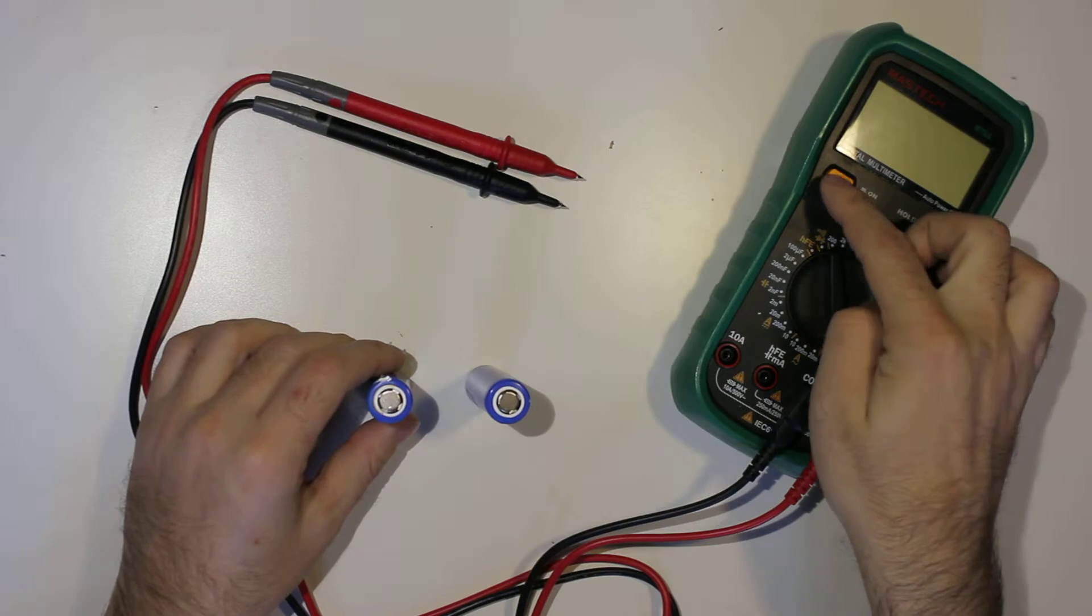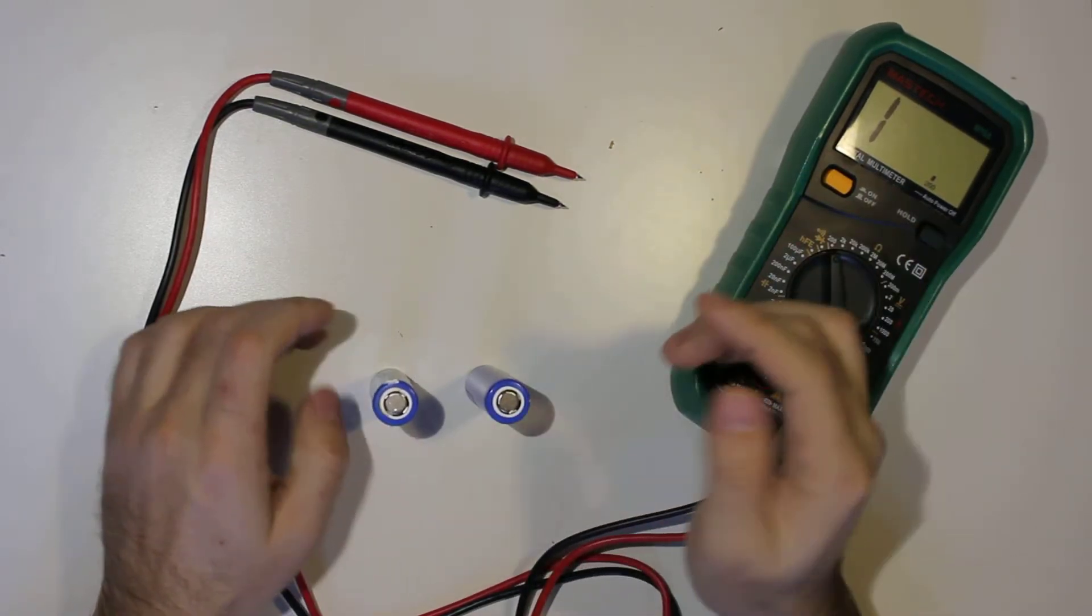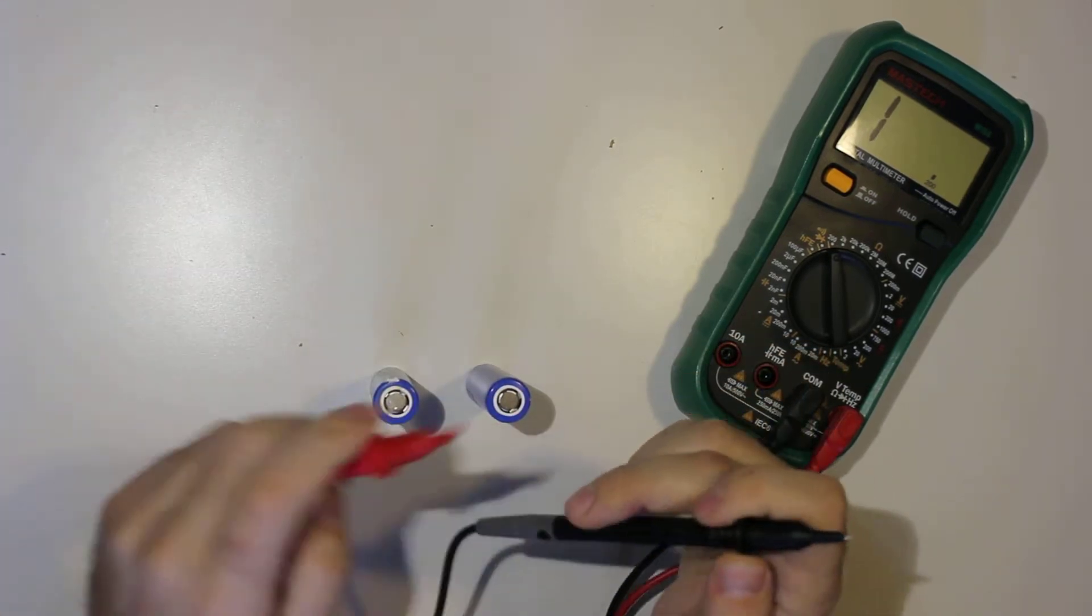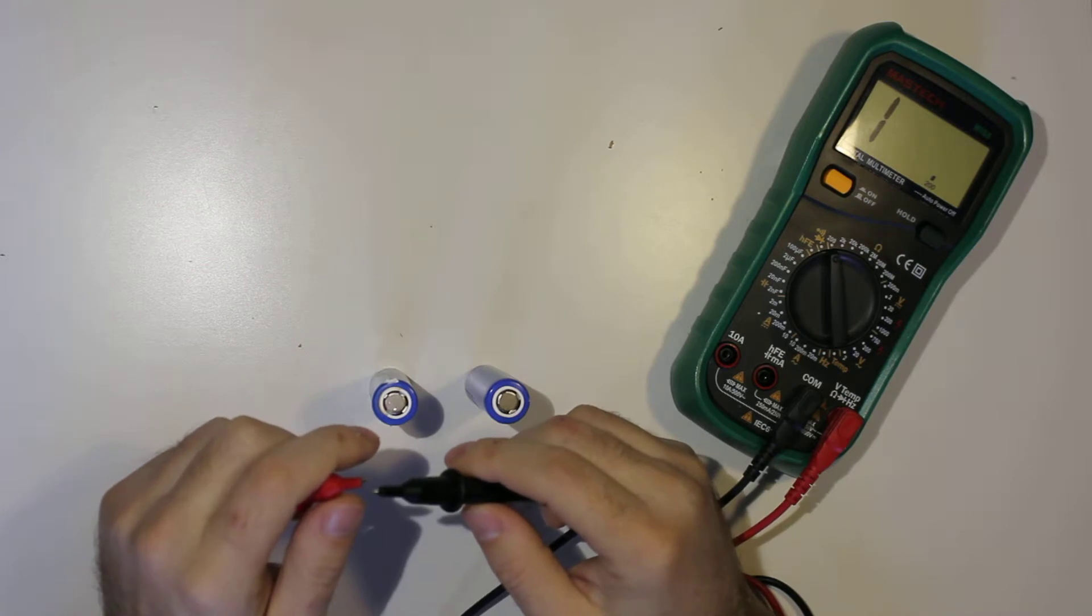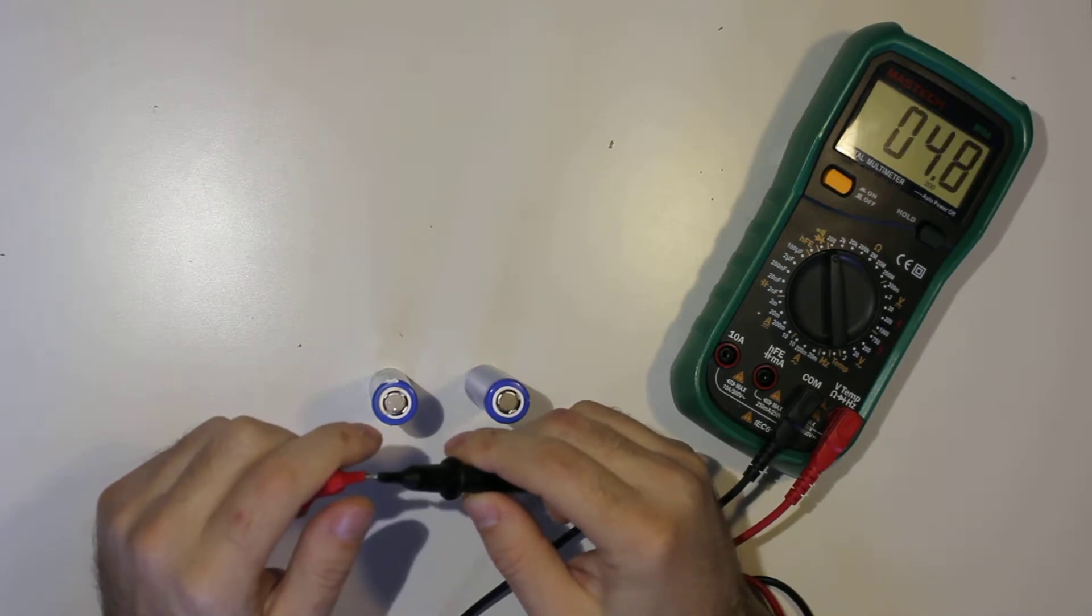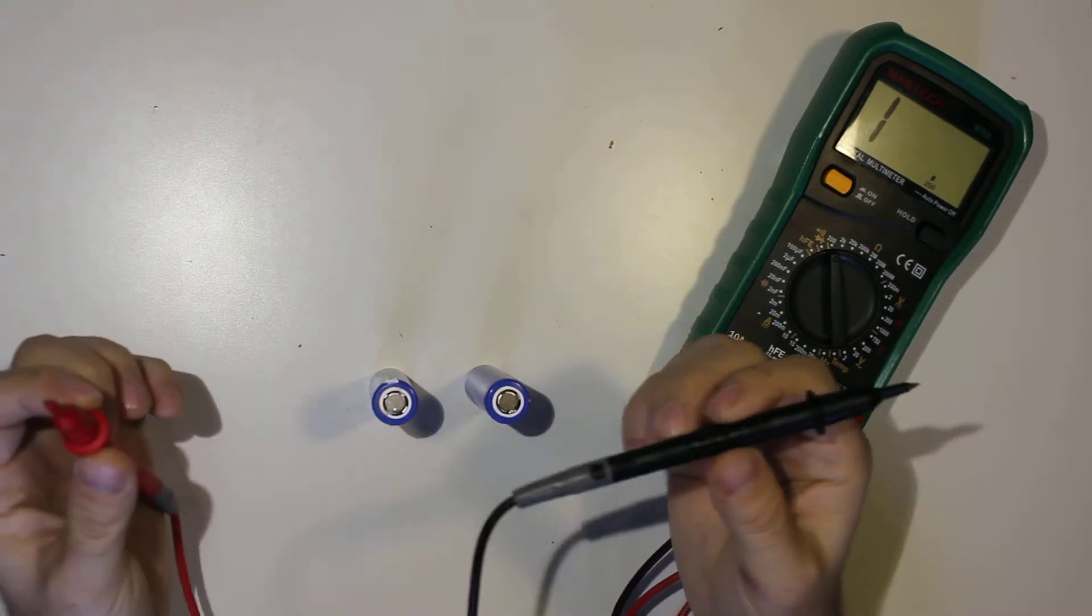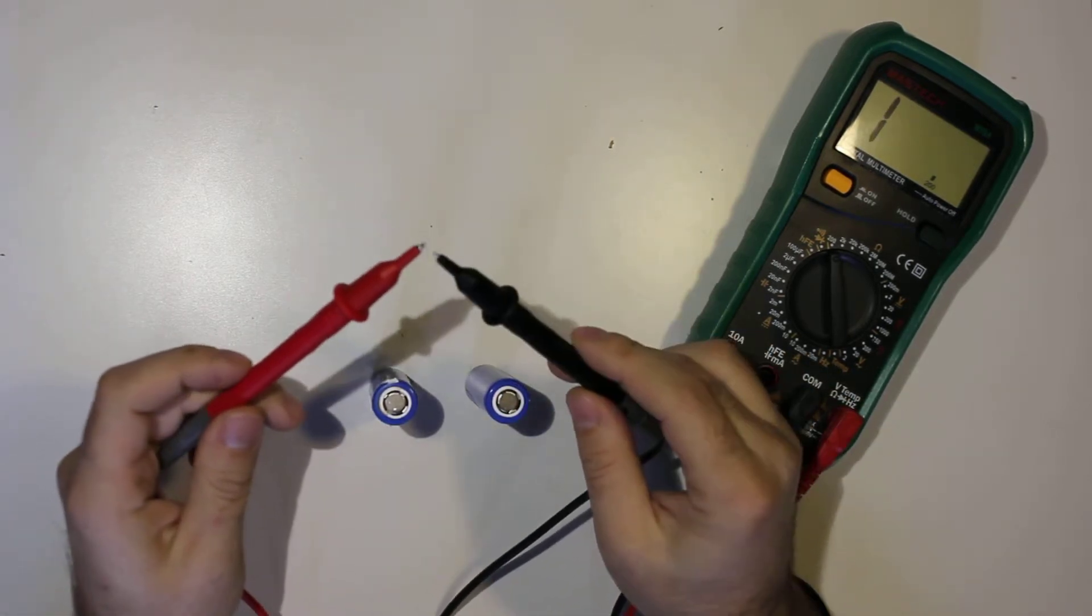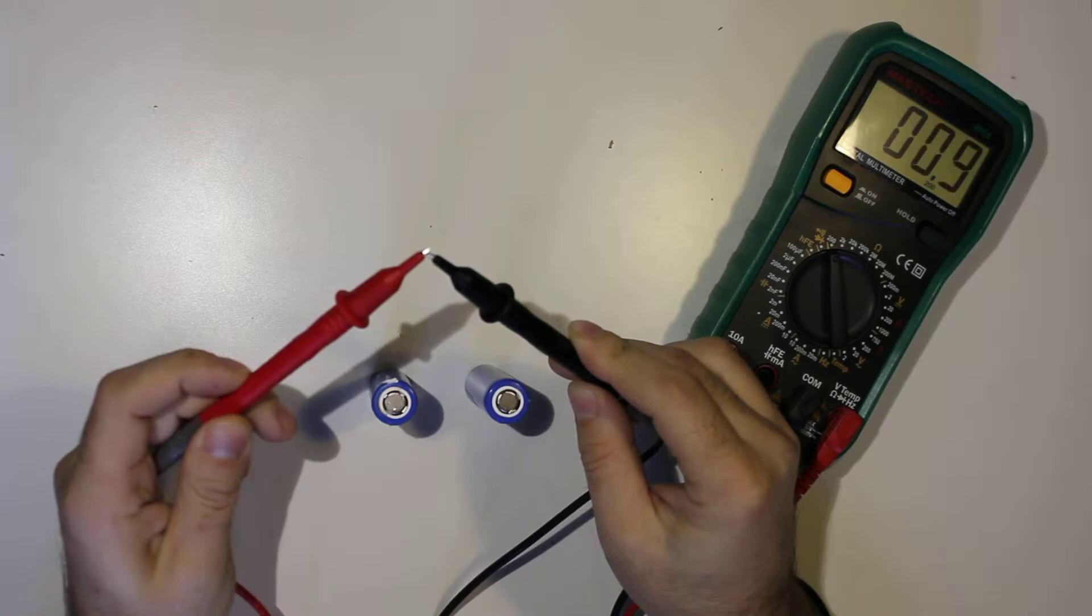I'm going to measure the resistance of the battery. Let's start with a short circuit on the leads. So it says 0.002 when the two leads are connected. It's at this time 0.00 something, okay.